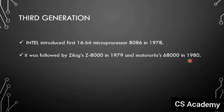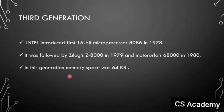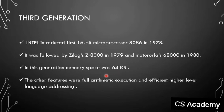In the third generation, the memory space was 64 KB. The 16-bit microprocessor had a memory space of 64 KB. The other features included full arithmetic execution and efficient higher-level language addressing.